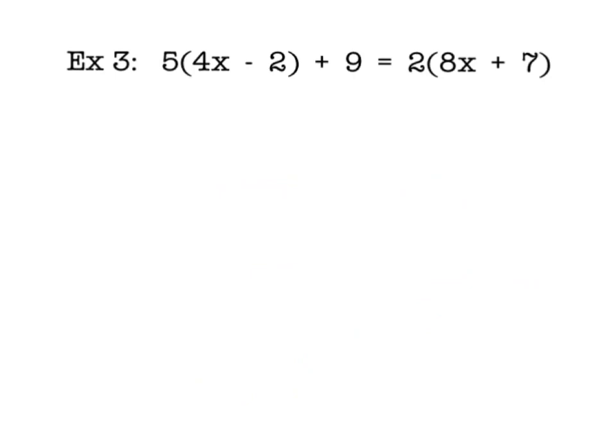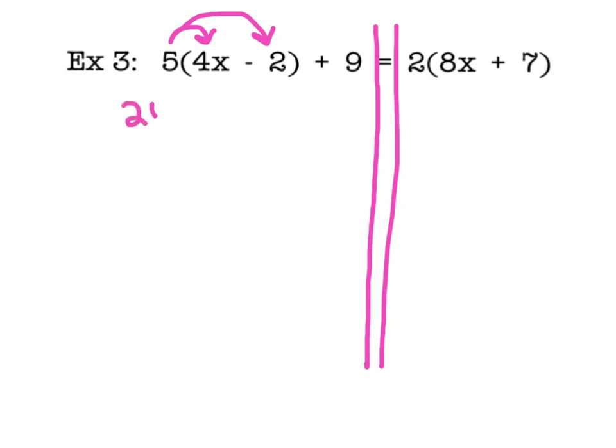Alright, ladies and gentlemen, please go ahead and write down example 3. This one looks like a whopper. I'm noticing that we're going to have to do the distributive property on both sides of the equal sign. So, we better get started. On the left, I'm going to distribute the 5 into the parentheses. There are two terms in the parentheses, so we're going to multiply that 5 by two different things. 5 times 4x is going to give me 20x minus 5 times 2, which gives me 10. The plus 9 is not in parentheses, so that will not be multiplied by the 5. On the other side of the equal sign, I'm going to distribute a 2 into both terms in the parentheses. 2 times 8x will give me 16x. And 2 times 7 gives me 14.